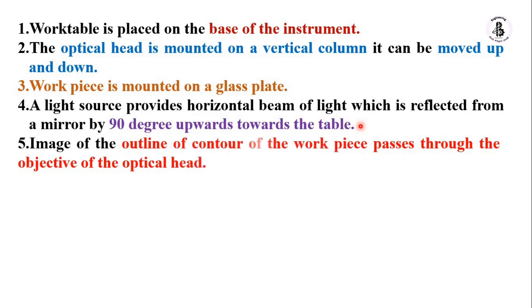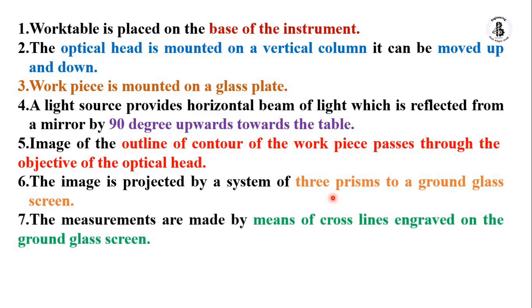After this, the image of the outline of contour of the workpiece passes through the objective of the optical head. Then we can see, or can say, the image will be projected by the system of three prisms to the ground glass screen.